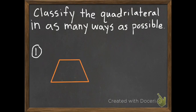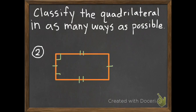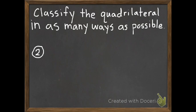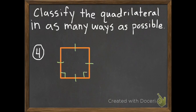On to the four problems. Same instructions — you need to classify the quadrilateral in as many ways as possible. Some may have up to four, some may only be one, some might be somewhere in between. You'll bring these four into class tomorrow and I'll check them. Number one. Number two — classify this quadrilateral in as many ways as possible. Number three. And last of all, number four.